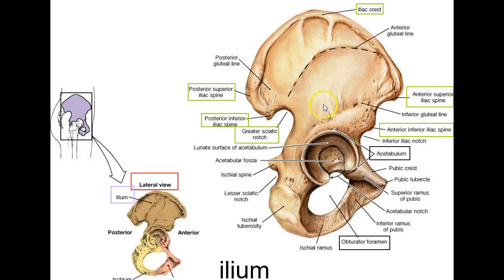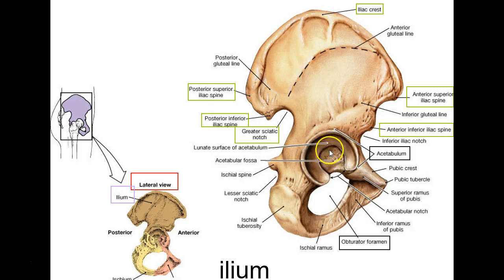Looking at the outside of this coxal bone — sometimes called the os coxae — this is the iliac crest. This is the greater sciatic notch; I'm sure you've heard of the sciatic nerve. And this is the lesser sciatic notch. Where the femur sits, the head of the femur, is in this cavity or fossa called the acetabulum or acetabular fossa.